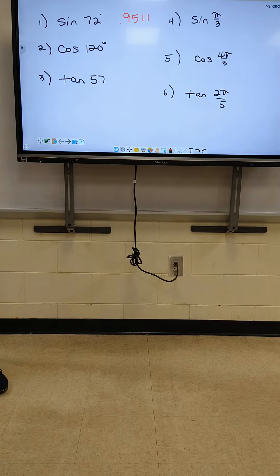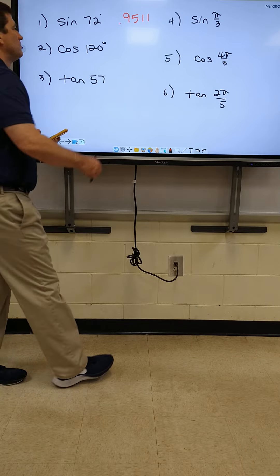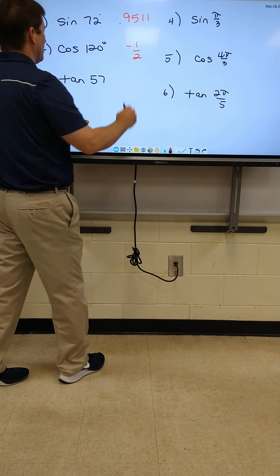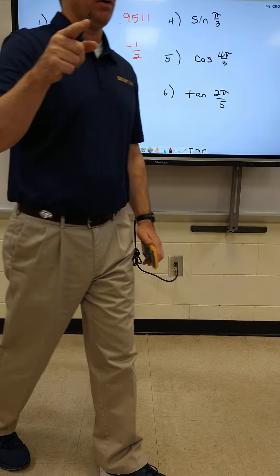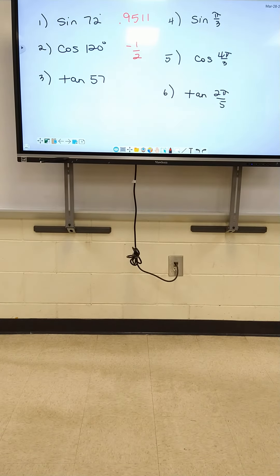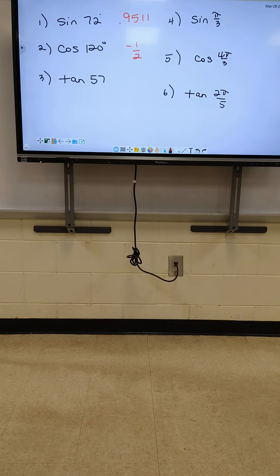Leave it as a fraction. Cosine of 120 — what did y'all get? Negative one over two. That'll work. If it's a decimal, let's go to four decimal places. Type in number three.